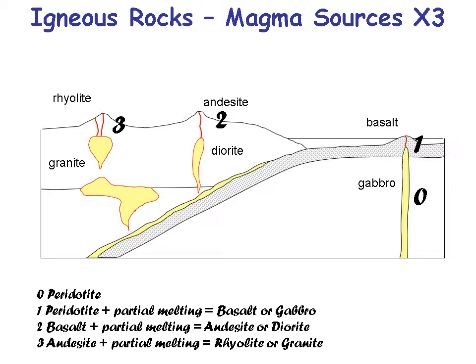Use this as a summary diagram: start with peridotite, partially melt it, you get basalt. Take basalt, partially melt it, you get andesite. Take andesite, partially melt it, and you get rhyolite. What you're doing with each partial melting is using Bowen's reaction series and removing certain elements. Because you knock out certain elements, those elements recombine differently and form a different mineral.